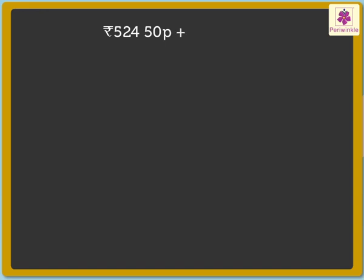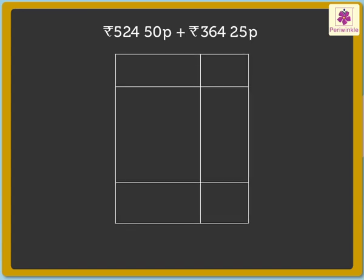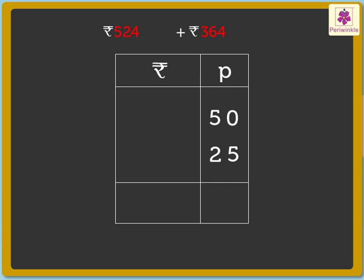To find out the total amount that Andy has, we need to add 524 rupees and 50 paise and 364 rupees and 25 paise. To add rupees and paise, you have to take care that you write the paise below the paise and the rupees below the rupees, like this.